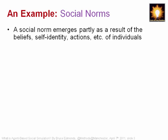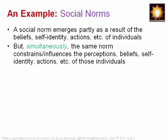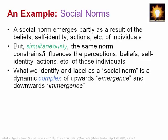So if you're walking down a corridor and everyone's going on the left-hand side, it may become a norm. But of course at the same time, the same norm is constraining and influencing all those actions and beliefs of those individuals. What we call a social norm is a label we stick on this complex interaction — this lock-in we observe in society — which involves both emergence from the individuals and what's sometimes called downward emergence, all at the same time.